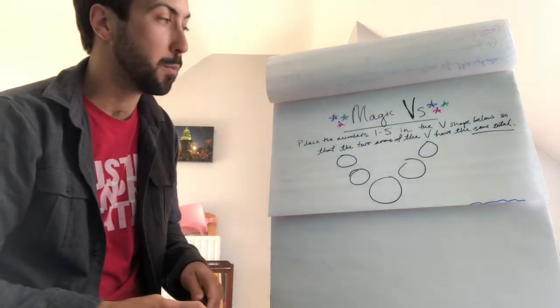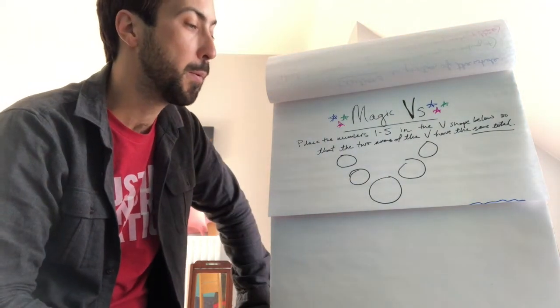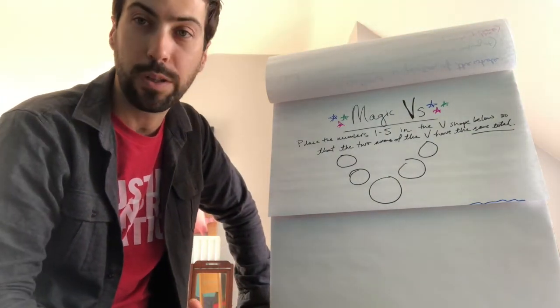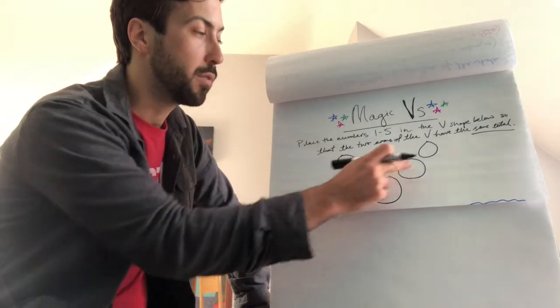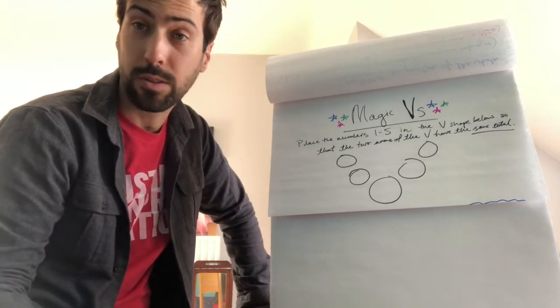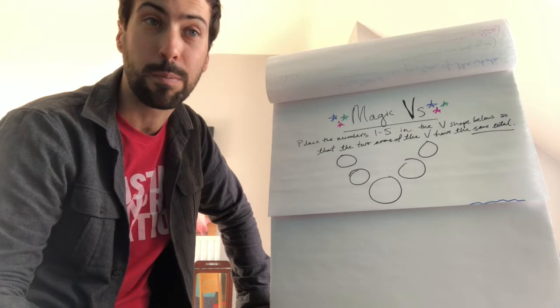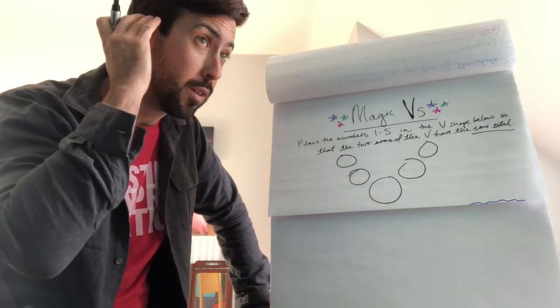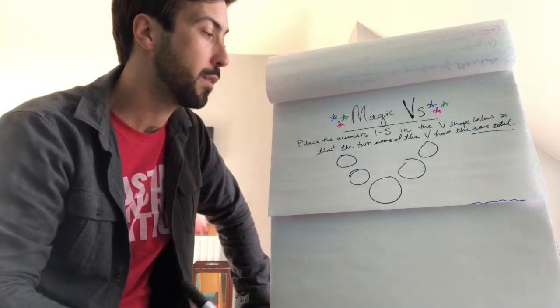So I want to place each of the numbers 1 through 5 in this V shape below. Now if I went into this willy-nilly, I might just go 1, 2, 3, 4, 5. Let's try that. That is a way of doing something systematically. So we know that if it doesn't work out, we can rule that one out.